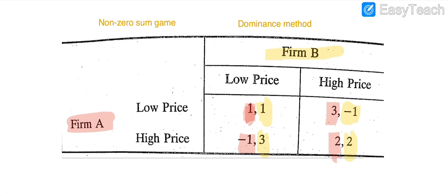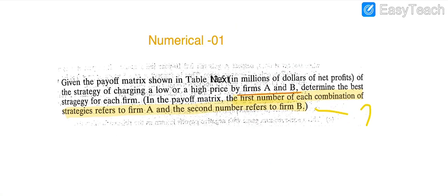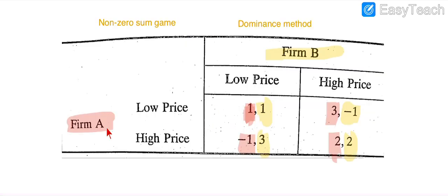Again, the first number of each combination of strategies refers to Firm A and the second number refers to Firm B. From this table you can easily understand the concept of the dominance method. I have already explained the definitions of dominance method and non-zero-sum game. Now you have to understand the concept of non-zero-sum game and dominance method with the help of the table.